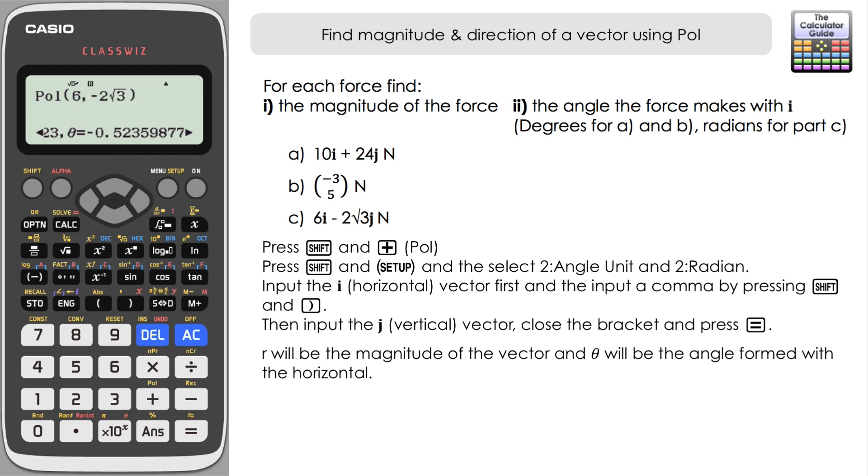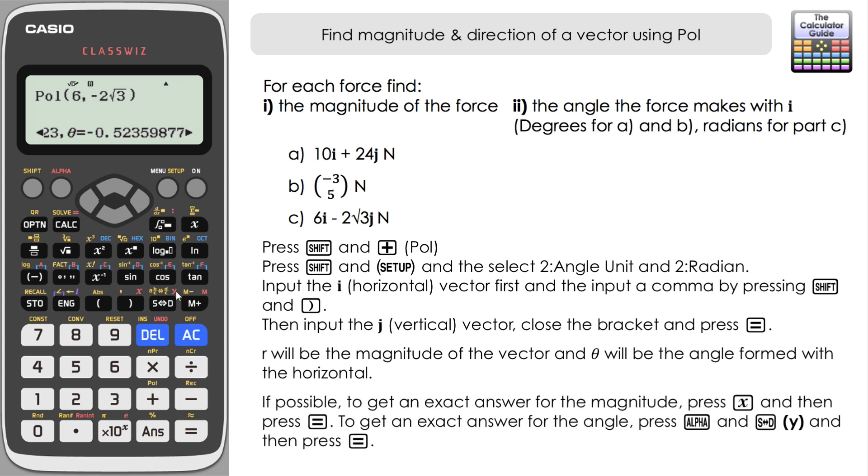Now a good question at this stage might be well what if you want exact answers? Well there is a secret way that you can actually reveal what they might be if they are relatively simple to give as exact answers. The calculator actually stores these values in your x and y on your calculator. So x it'll store the r value, the magnitude. Y it will store the angles. So if we press x, and there's a shortcut to x here on the fx 991 ex, or you might have to press alpha and x on other models, and press equals, it's given that as a surd. So an exact form answer because it's relatively simple, the calculator has been able to work out and give that in surd form.